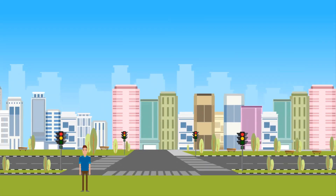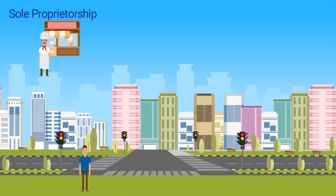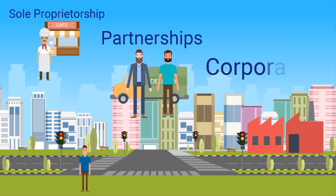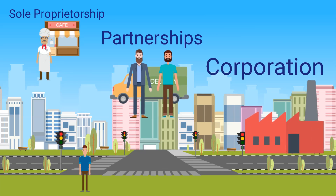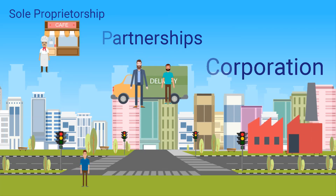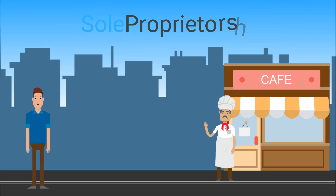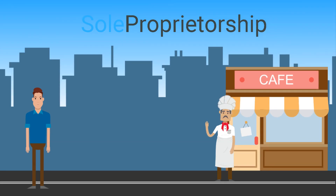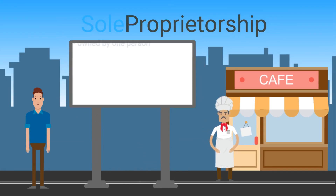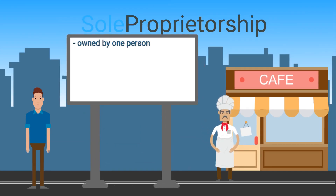There are three different forms of organization for businesses. They include sole proprietorship, partnerships, and the corporation. The sole proprietorship is characterized by single-person ownership, simplicity in setup and decision-making, and a limited life.